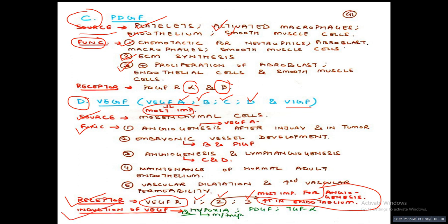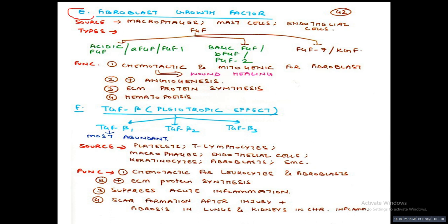The fifth growth factor is FGF — fibroblast growth factor. Sources: macrophages, mast cells, and endothelial cells. Types: acidic FGF (aFGF/FGF1), basic FGF (bFGF/FGF2), and FGF7 (KGF). Main functions: chemotactic and mitogenic for fibroblasts, important role in angiogenesis, contributes to extracellular matrix protein synthesis, and has a role in hematopoiesis.